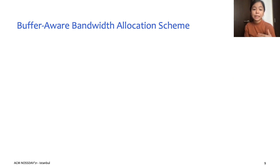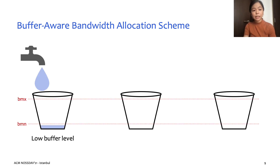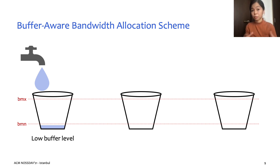In this slide, we illustrate the key idea behind the logic used in our scheme. For clients that do not have a healthy buffer — in other words, they have a low buffer level below our min buffer threshold — we want to help them more by allocating more bandwidth to them, so that they can avoid stalls and build up their buffer more quickly.